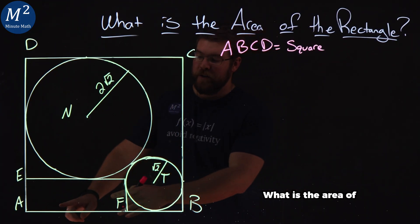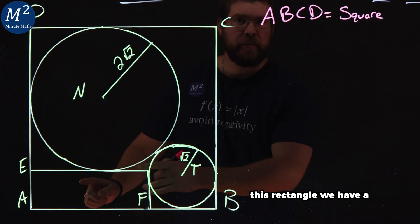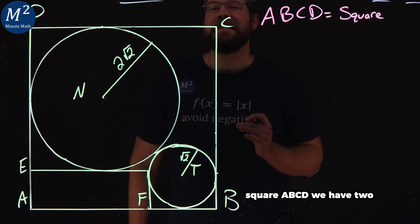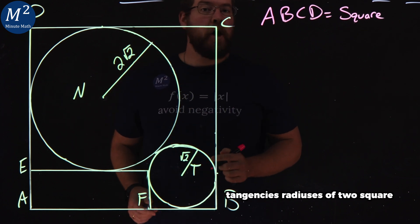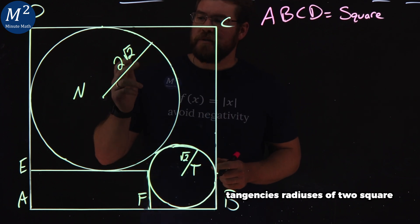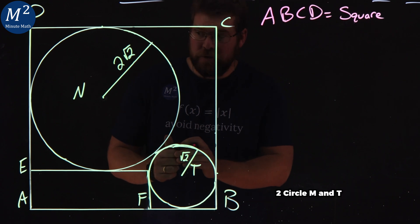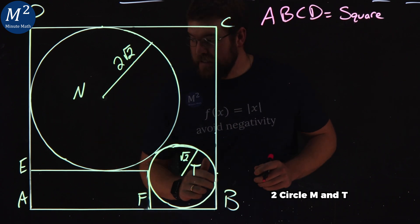What is the area of this little rectangle? We have a square ABCD. We got two circles inside, points of tangency, radiuses of 2√2 and √2, circles N and T.